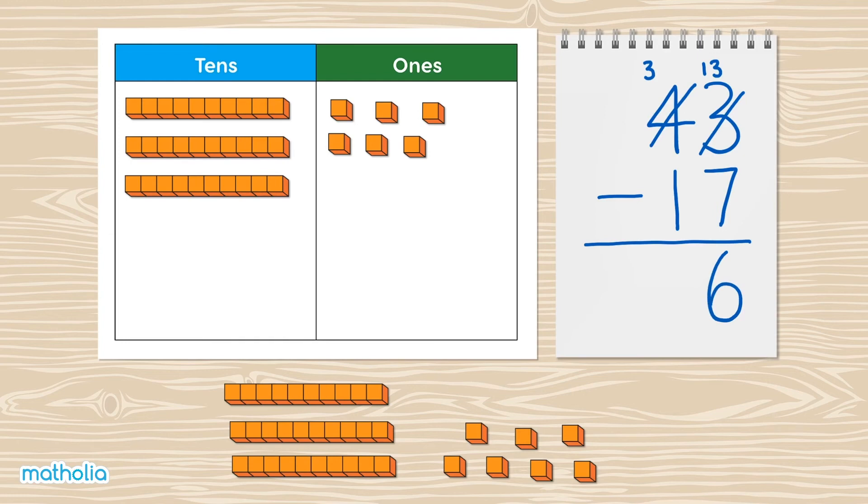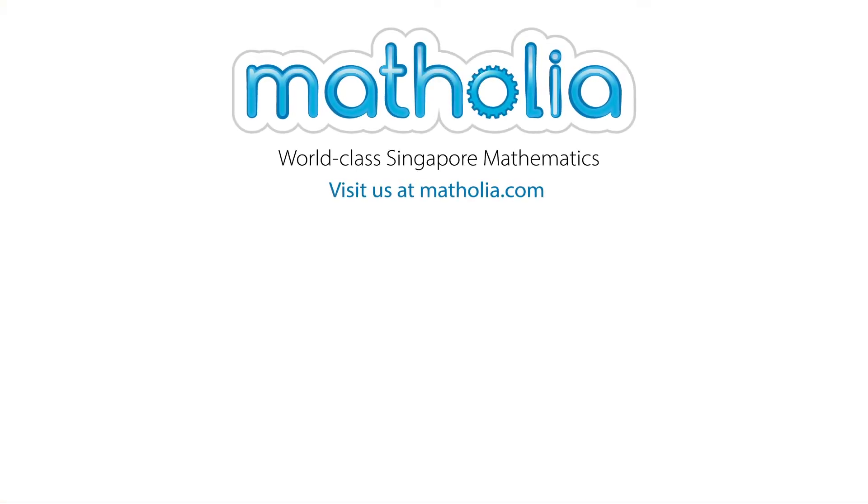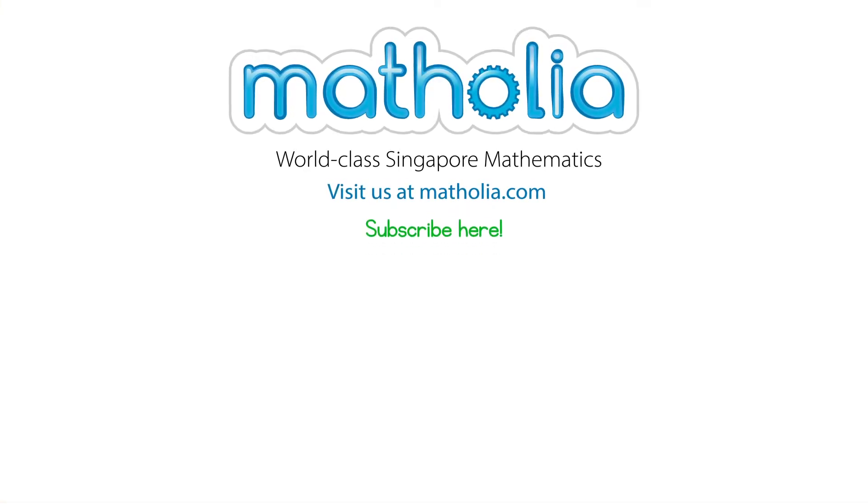subtract the tens. There are two tens remaining. Write two in the tens column. We're all done! So 43 subtract 17 equals 26. In the next video, we'll use bar models to help us subtract. Don't forget to subscribe.